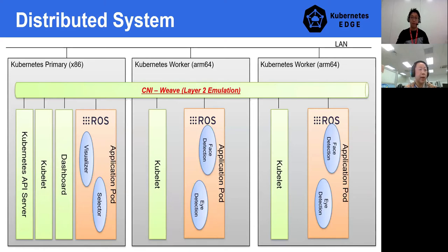Here is a described edge distributed system on an edge environment as a typical use case. Multiple robots are connected in the same network and working together for the user. The application is built on top of ROS — publisher/subscriber architecture as the application layer to support the distributed system. There are face detection and eye detection containers running inside pods on the worker nodes. A selector container can select images to notify the visualizer to display what image should be shown on the monitor on the primary node. This is one example, but we can do this with Kubernetes. Since this is a distributed system, it fails independently but appears to be a single system as user experience.